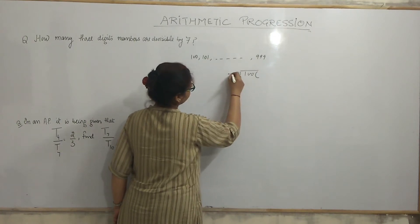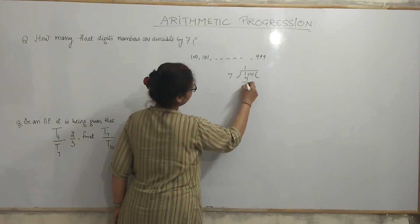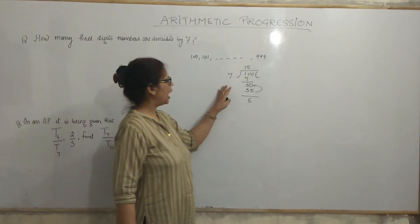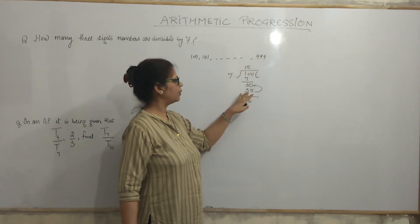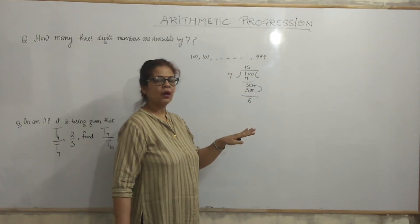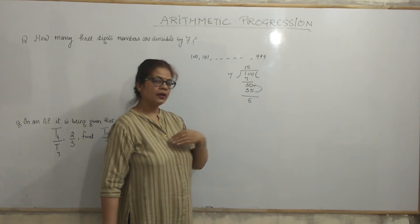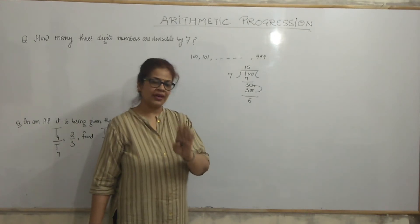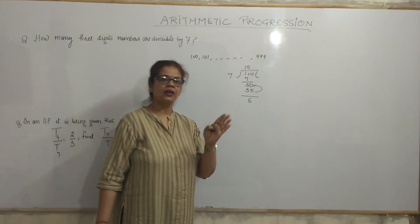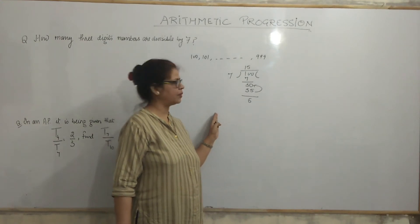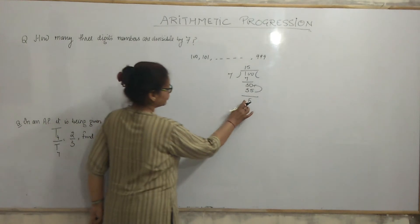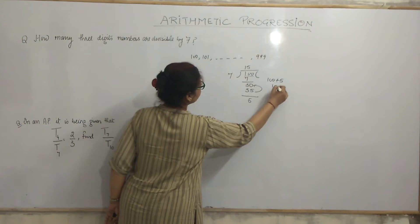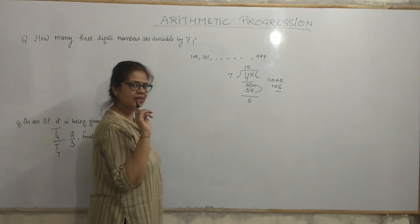Out of these 3-digit numbers, we will choose the numbers which are divisible by 7 only. How we choose that? Look, divide 100 by 7. 7 ones are 7, 30. Now, 7 fives are 35. Look, I took a bigger number 35, not a smaller number, because then it will give me number less than 100.